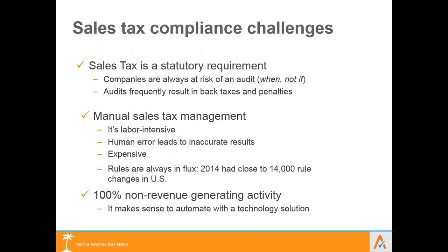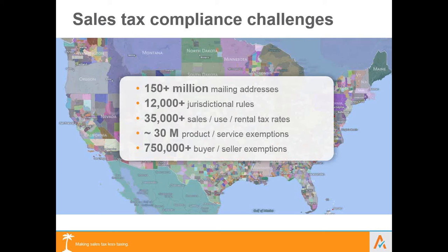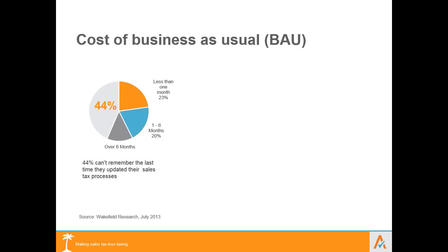Consider the scale of the challenge. There are over 150 million mailing addresses in the U.S., 12,000 different jurisdictional rules, 35,000 sales and use tax rates, 30 million product exemptions, and over 750,000 buyer and seller exemptions. With this magnitude, it's no wonder sales and use tax compliance can be such a challenge.